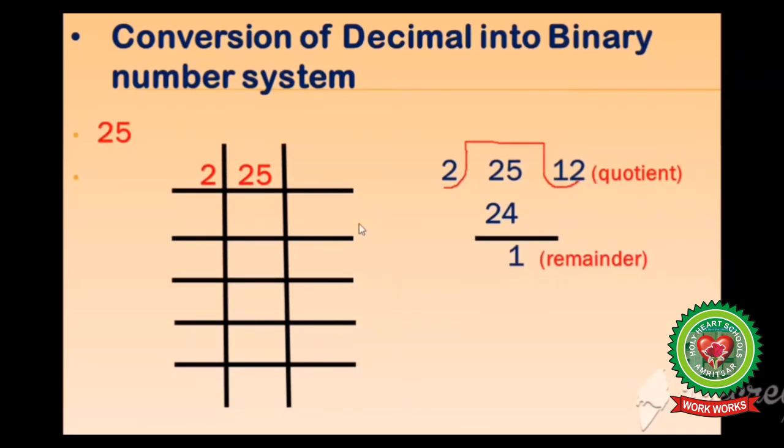Students, you will always write remainder on this right side and quotient here. 12 is the quotient and 1 is the remainder. Again divide 12 with 2, and the output is 6. 6 is the quotient and 0 is the remainder because 6 times 2 is 12. Next step, again divide 6 with 2. 3 times 2 is 6, and again 0 is the remainder.